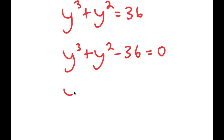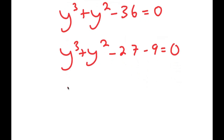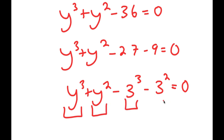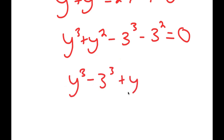From here, I'm going to rewrite the 36 as negative 27 minus 9. The reason I did this is because 27 can be rewritten as 3 to the power of 3, and 9 can be rewritten as 3 squared. Notice how I have a number to the power of 3 and that same number squared — 3 to the power of 3 and 3 squared. So now I'll switch the order and group the powers of 3's together and the powers of 2's together.